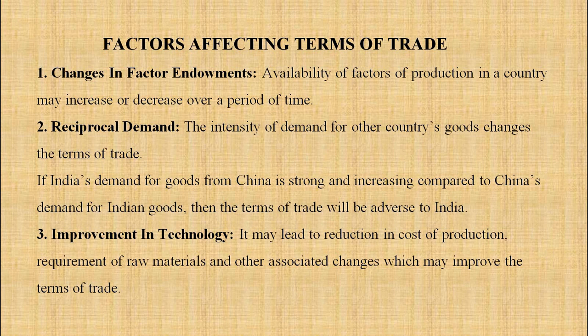Now let us discuss the factors affecting terms of trade. First, changes in factor endowments: availability of factors of production in a country may increase or decrease over a period of time. Second, reciprocal demand: the intensity of demand for other countries' goods changes the terms of trade. If India's demand for goods from China is strong and increasing compared to China's demand for Indian goods, then terms of trade will be adverse to India.